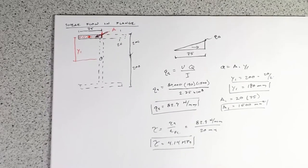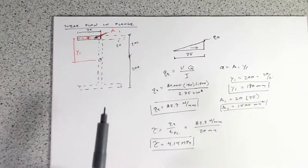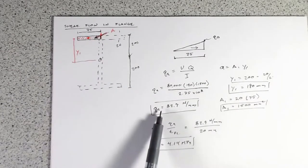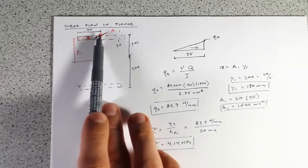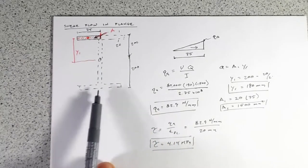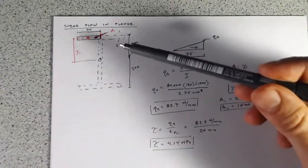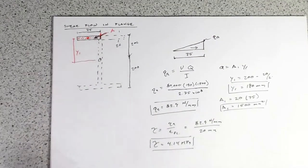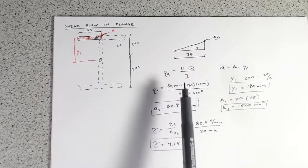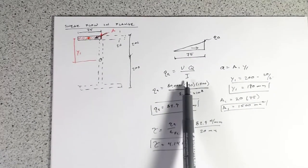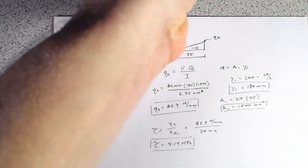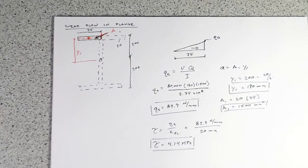Due to symmetry, this value QA is going to be the same for each of these flanges, because you have the same distance from the neutral axis to area A1, and the same A1. So the Q doesn't change, the applied load doesn't change, and the moment of inertia doesn't change — that's why we get a distribution that looks like this.